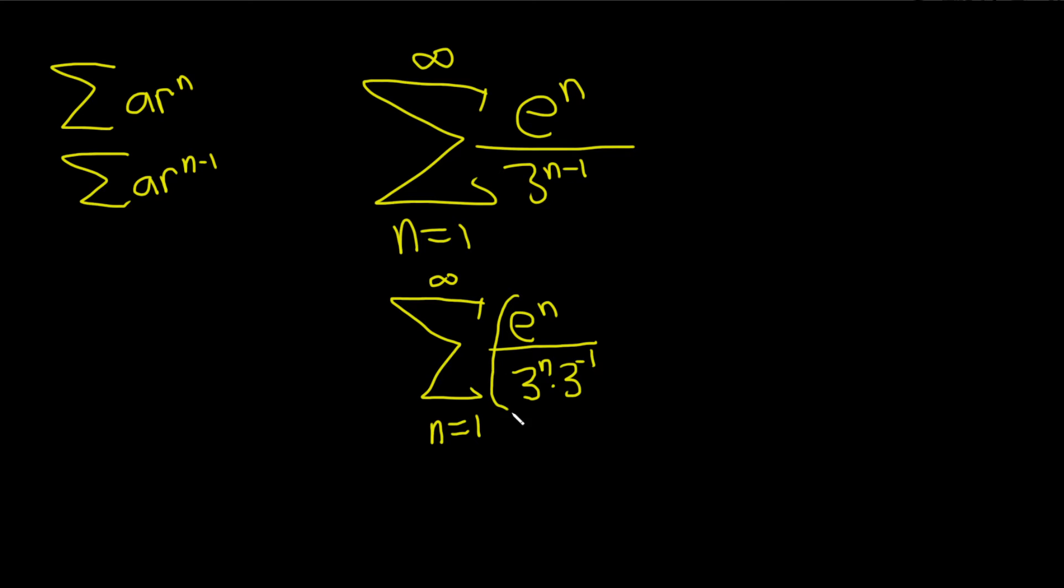In the next step we can combine them like this: the infinite sum as n runs from 1 to infinity can be written as e over 3 to the n. And then we have this 3 to the negative 1 here, let's bring it upstairs and it'll become a 3.